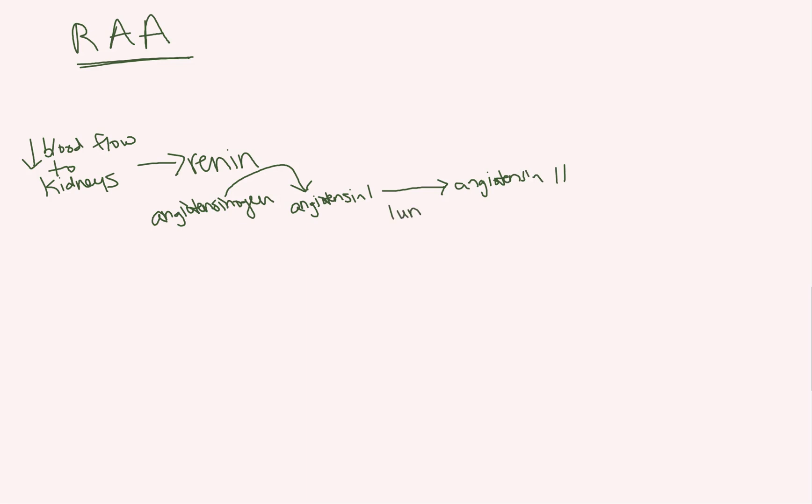And then angiotensin 1 converts to angiotensin 2. And that is via an enzyme in the lungs called angiotensin converting enzyme, right? Which makes sense. We're converting angiotensin with an enzyme in the lungs. So angiotensin converting enzyme. And that's where our ACE inhibitors end up working. I'm sure you can predict.